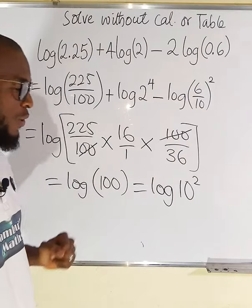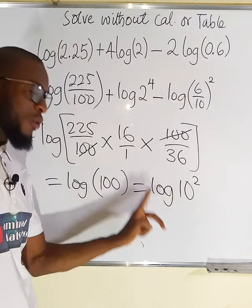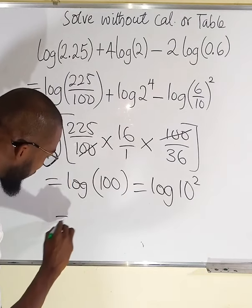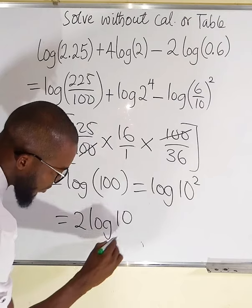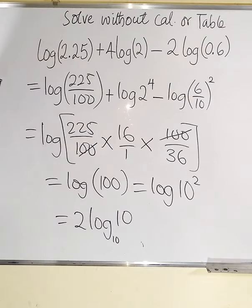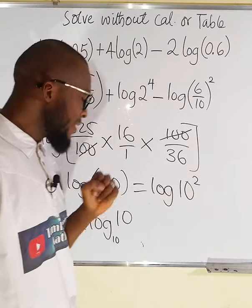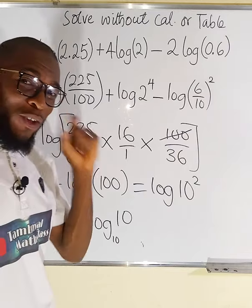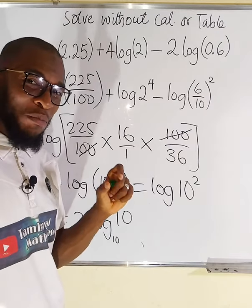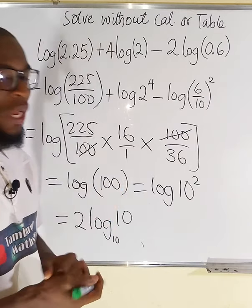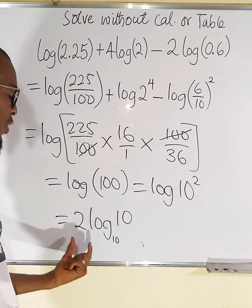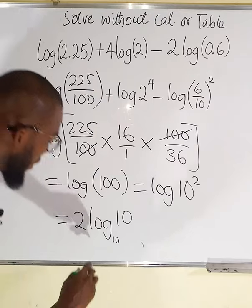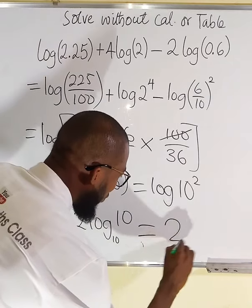Then we can apply that law that says this power can now drop down to multiply. So this is equal to 2 log of 10. Remember the base is 10. And another law says log of a number having the same base as that number is equal to 1. Therefore log 10 base 10 is equal to 1, and 1 multiplied by 2 is equal to 2. Finally our answer is equal to 2.